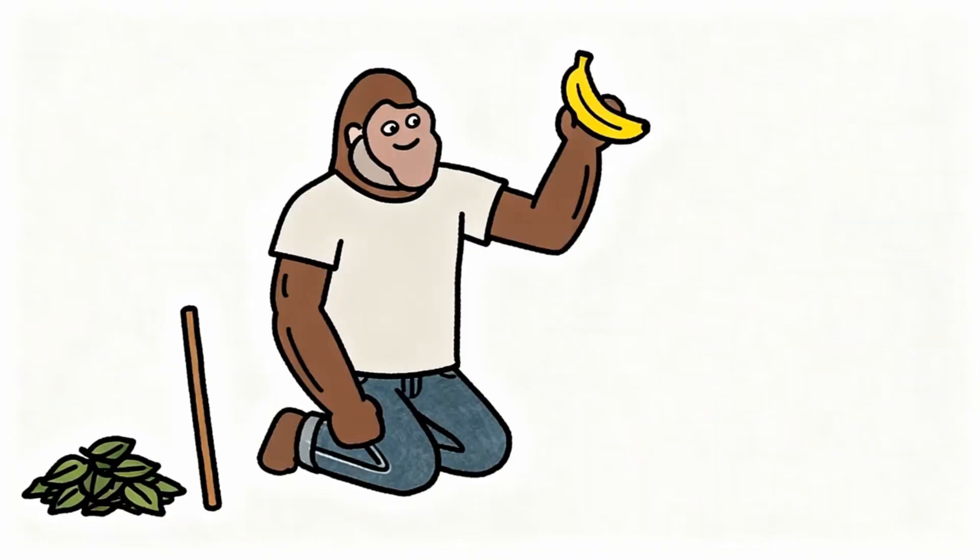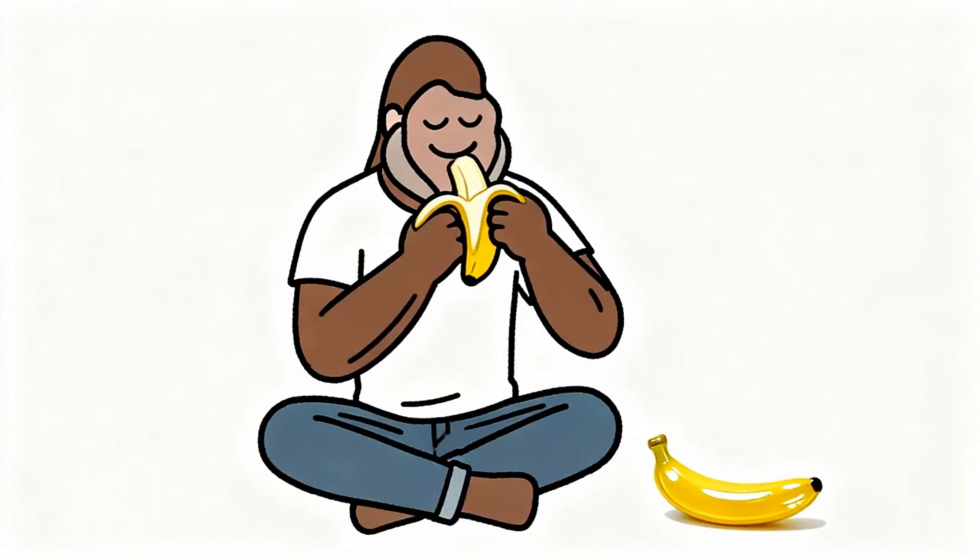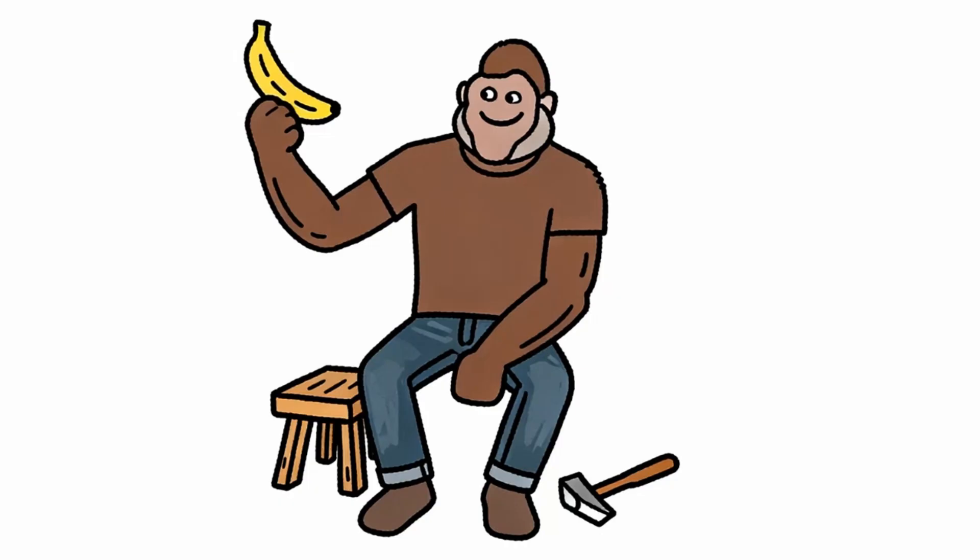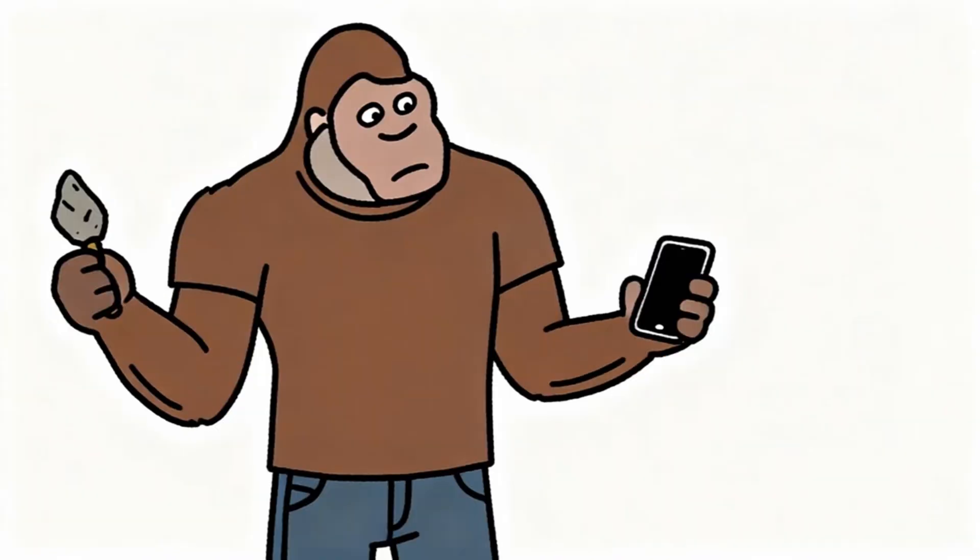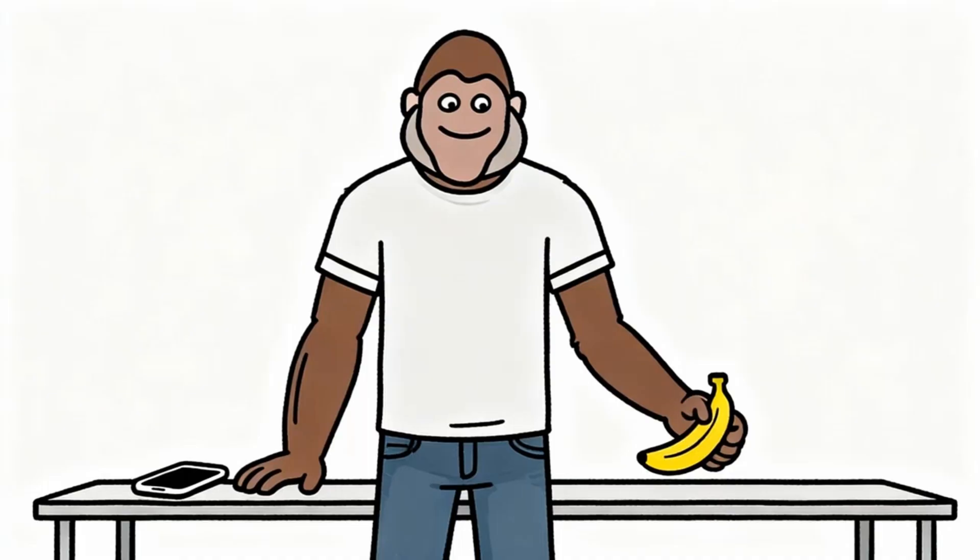Remember, monkey brain evolved to find rare bananas after great effort. When you honor this design instead of fighting it, life becomes deeply satisfying again. Real bananas taste incredible when you stop eating artificial ones. Real accomplishments feel amazing when you stop collecting fake achievements. The dopamine trap convinced you that happiness comes from getting more bananas faster. But true happiness comes from appreciating the bananas you earn through genuine effort. Monkey who understands this secret lives rich life full of real satisfaction. You are not broken. You are not weak. You are monkey whose ancient survival system got hijacked by modern technology. Now you know how the trap works, and you know how to escape. Monkey is all of us.